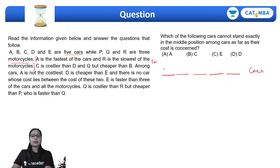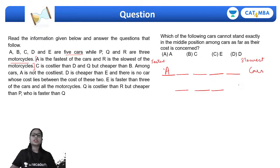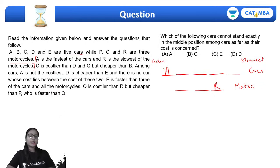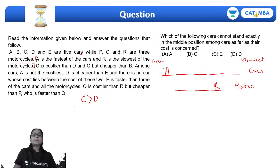Moving on — since there are two parameters, speed and cost, I will make two columns. The next statement says C is costlier than D, and D and Q, meaning C is costlier than Q also, but cheaper than B. So: B > C > D and C > Q. Among cars, A is not the costliest, so A is not in the first position of the cost arrangement. D is cheaper than E and there is no car between them, so E and D are adjacent with E > D.